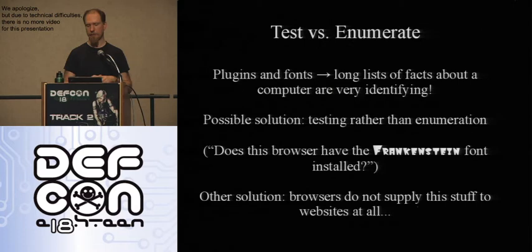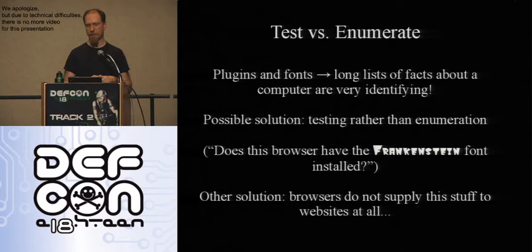Another lesson is that if you're designing an API that runs inside a browser, you should never offer a call that returns a gigantic list of system information about the machine you're running on. This was true of the plugin list — you ask navigator.plugins and get back a list of all plugins and their version numbers, which makes many people unique. Similarly, don't return a list of all the fonts. If you really need to show a particular font, make the user ask about that specific font rather than being able to query all fonts at once.